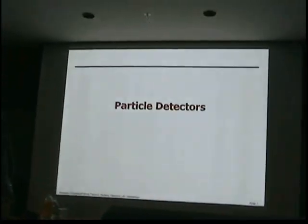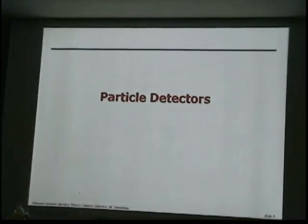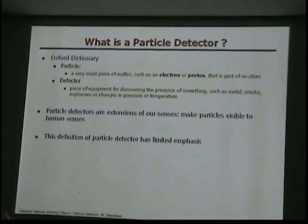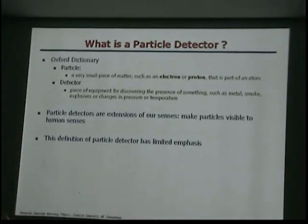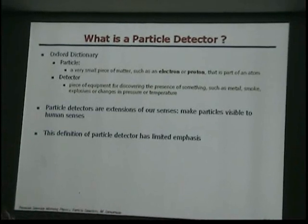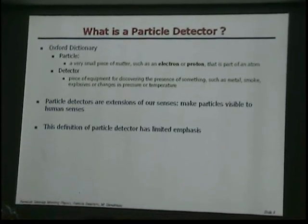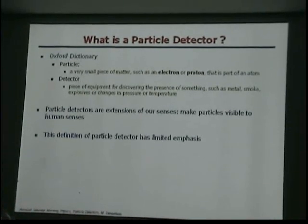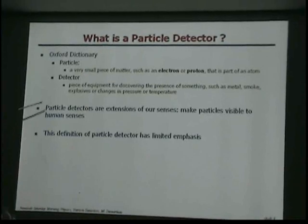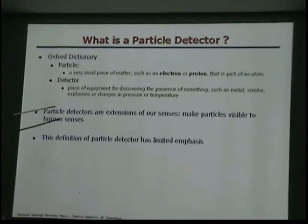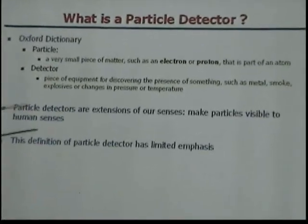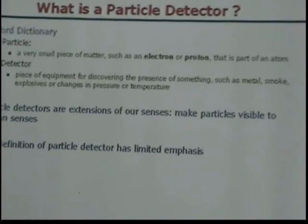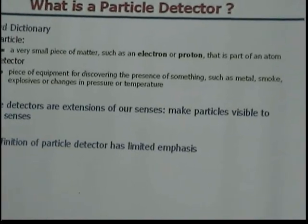So what is a particle detector? If you go to the dictionary: a particle is a very small piece of matter — an electron, a proton — and a detector is a piece of equipment for discovering the presence of something, like a metal detector at the airport.